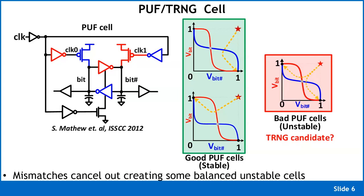No matter what we do, whenever we build a PUF array there will always be some bad PUF cells. So the question was: instead of wasting energy weeding them out, can we do something useful with them? The most obvious thing is to use them as TRNG cells.